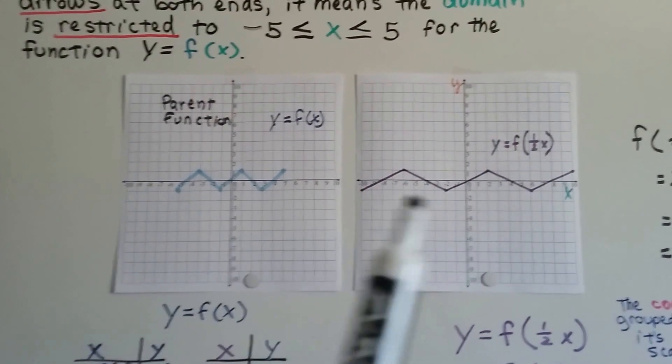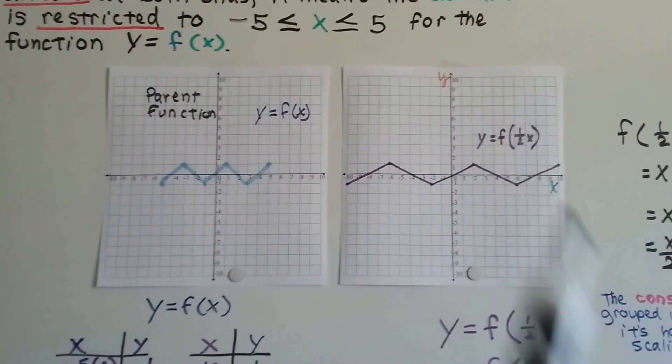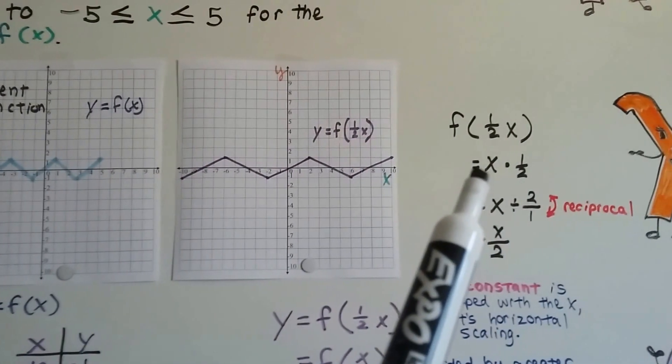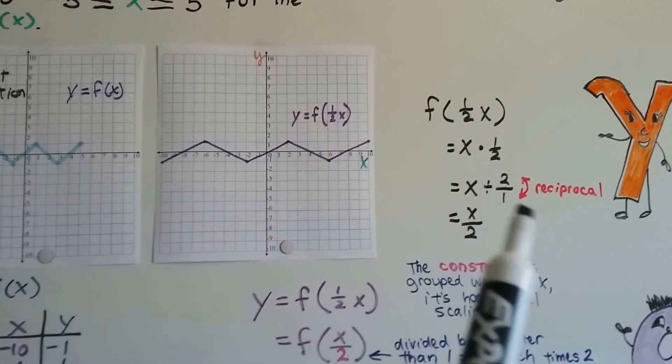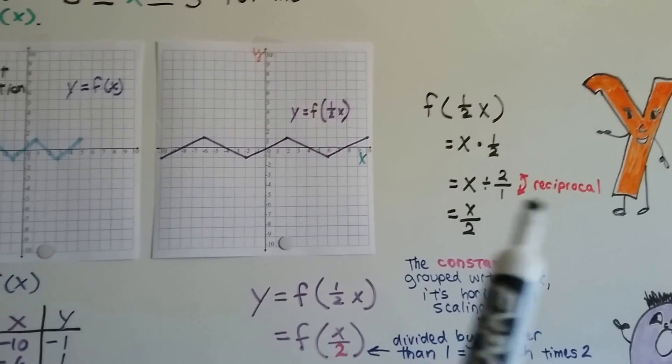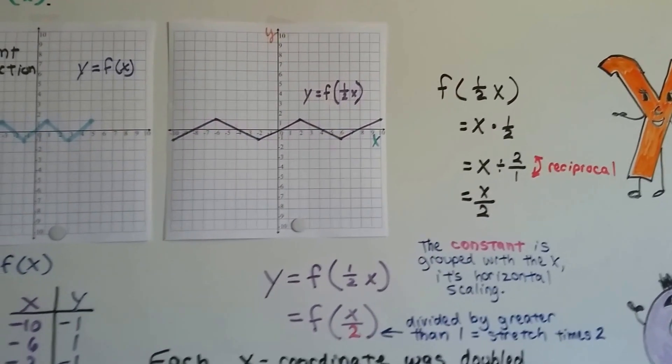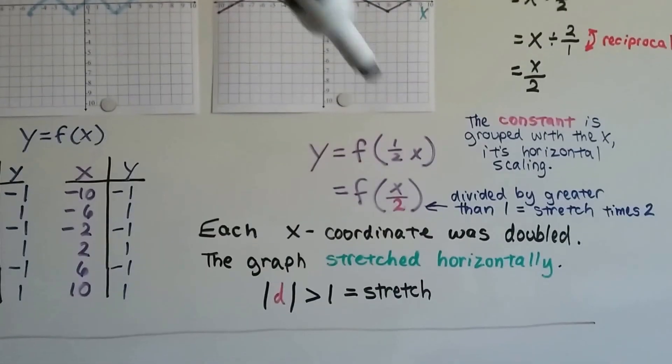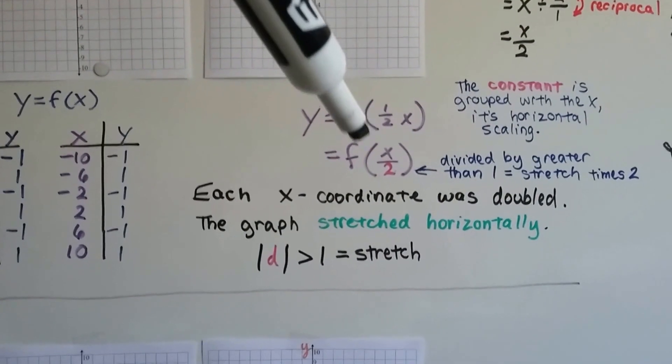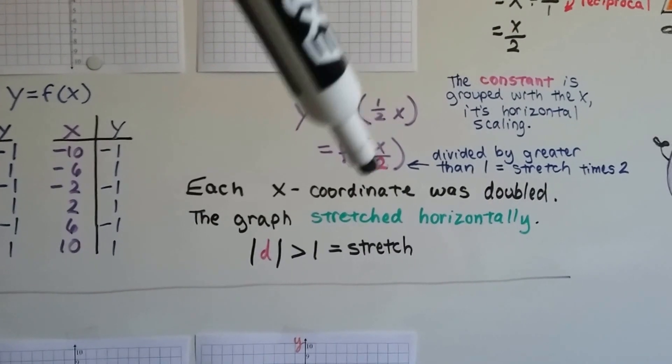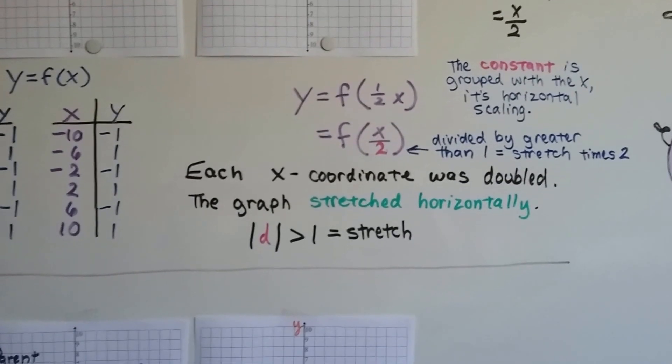All right, so now take a look at this one. This one's stretching, and we've got y equals the function times half x. So again, what's happening is we've got half times x, or x times a half. And to divide it, we have to flip it around to its reciprocal. So x is being divided by 2. And the constant is grouped with the x, so it's a horizontal scaling. And now we have x divided by 2. It's divided by a greater than 1, so it's going to stretch times 2.